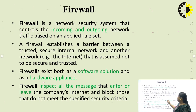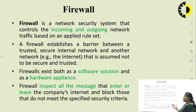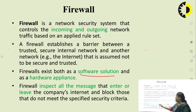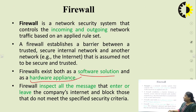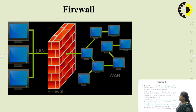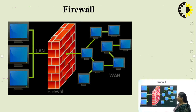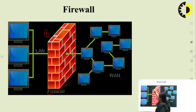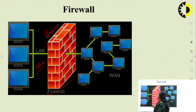A firewall acts as a barrier between a trusted and secured network and another network, such as the internet, which is assumed not to be secure. Firewall exists both as a software solution and as a hardware appliance. It inspects all messages that enter or leave the company's internet and blocks those that do not meet the specified security criteria. It acts as a barrier between the local area network and the internet.